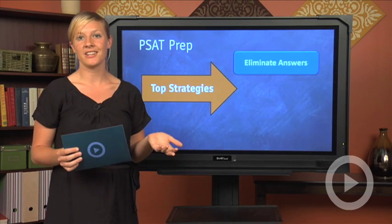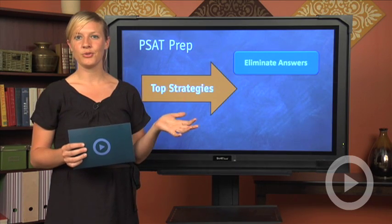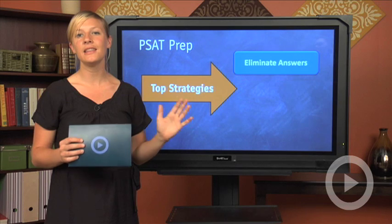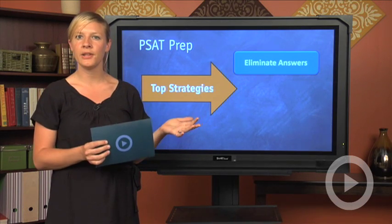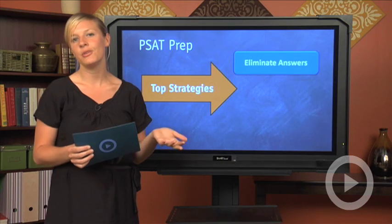For example, in the math section, when you see your five answer choices, if one of them is completely oddball, like 350%, and the others are somewhere between 20% and 30%, chances are you can eliminate it.